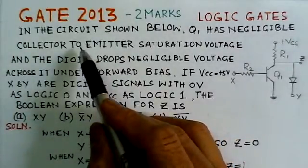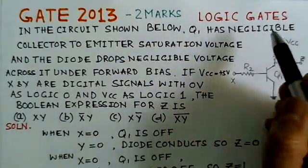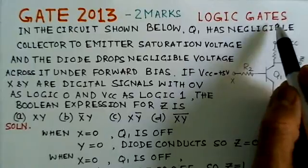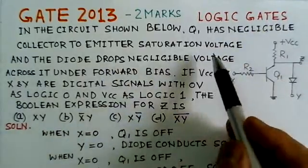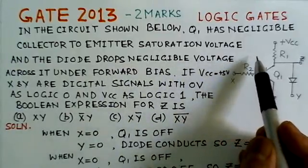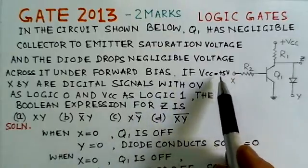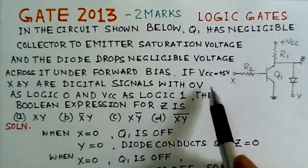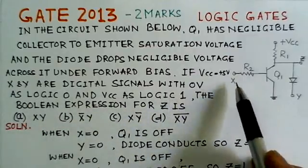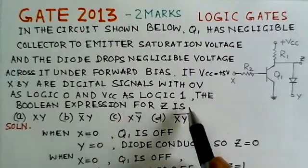We will read out the problem for GATE 2013. This is of two marks on the logic gates or built-in simplification. In the circuit shown below, Q1 has negligible collector to emitter saturation voltage and the diode drops negligible voltage across it under forward bias. If VCC is plus 5 volts, X and Y are digital signals with 0 volts as logic 0 and VCC as logic 1.